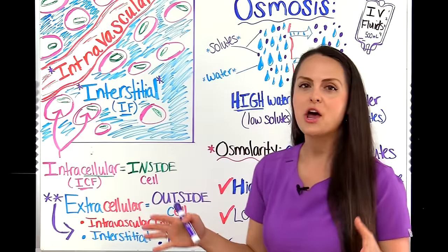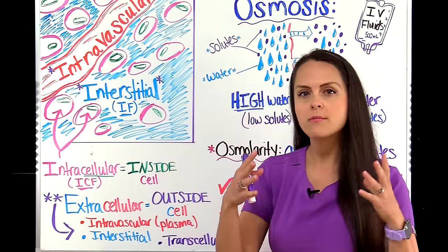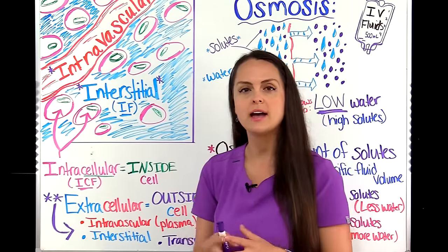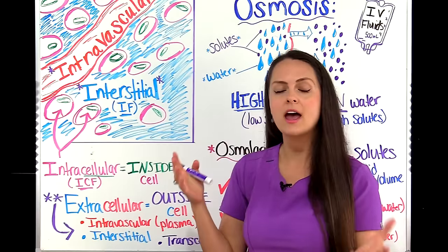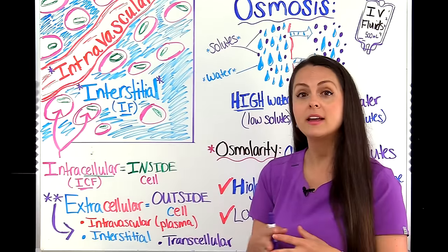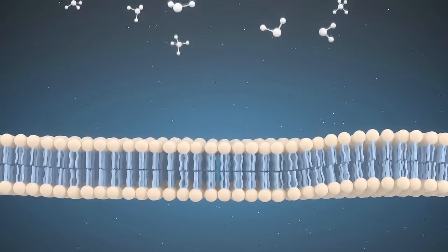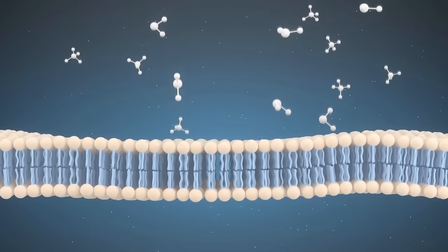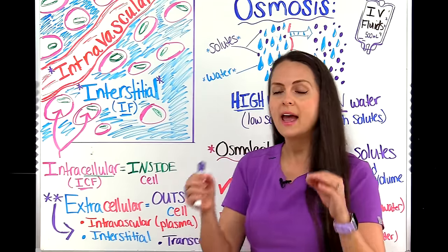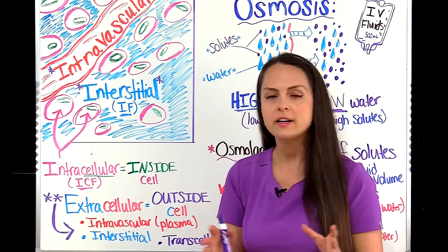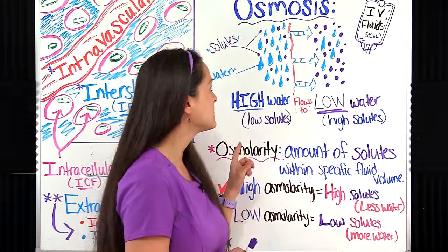It's important to note that these compartments are all interconnected, each with their own amount of water and electrolytes. They work together to help maintain a homeostatic environment in our body by shifting water, electrolytes, and other nutrients around to keep that balanced environment. They do this shifting through various processes, with one of those processes being osmosis.